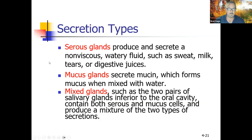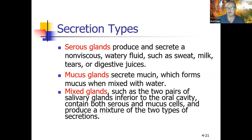Secretion types: serous glands produce non-viscous, watery fluids such as sweat, milk, tears, or digestive juices. Mucous glands secrete mucin, a protein that forms mucus when mixed with water. Mixed glands, such as the salivary glands, contain both serous and mucous cells and produce a mixture of both types — giving us our saliva.